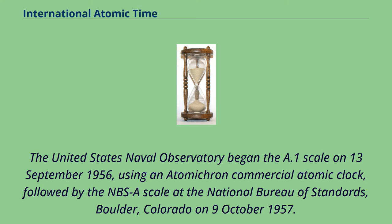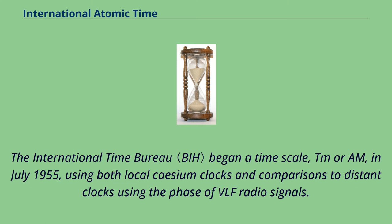The United States Naval Observatory began the A.1 scale on September 13, 1956, using an Atomichron commercial atomic clock, followed by the NBS-A scale at the National Bureau of Standards, Boulder, Colorado on October 9, 1957. The International Time Bureau began a timescale, TM or AM, in July 1955, using both local cesium clocks and comparisons to distant clocks using the phase of VLF radio signals.